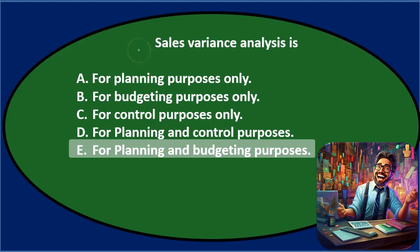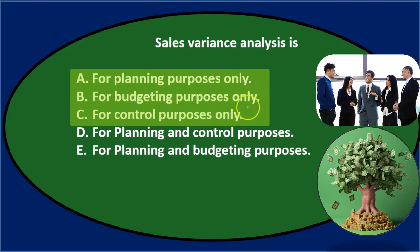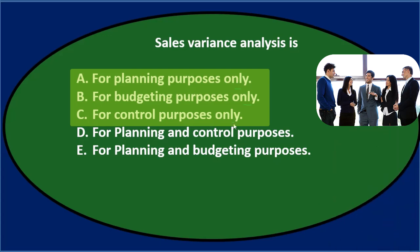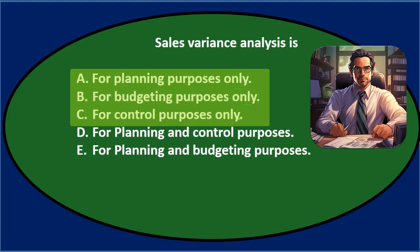Let's go through this using the process of elimination. We've got options A, B, and C with 'only' attached to each — for planning purposes only, for budgeting purposes only, for control purposes only. When we see all the 'onlys' plus combination answers, it often means the answer will be a combination rather than any single 'only.' We want to read through all the options to catch something like 'all of the above.'